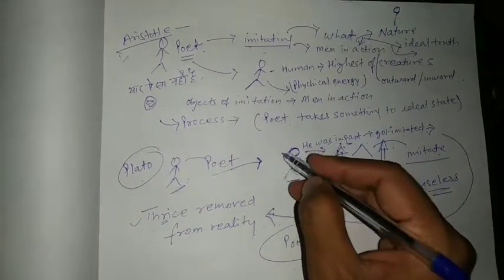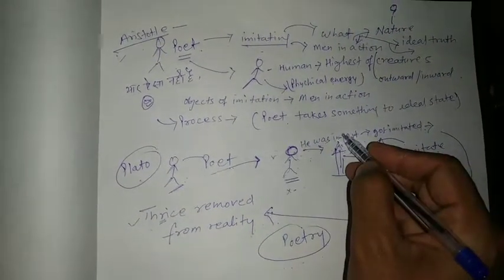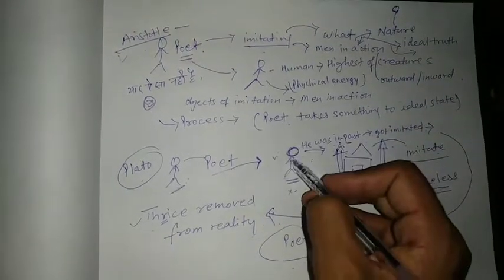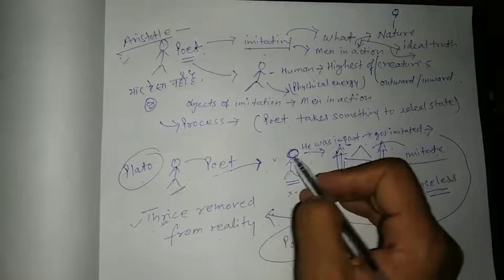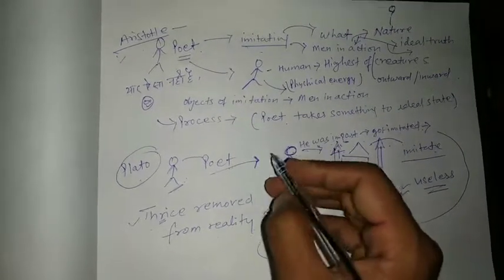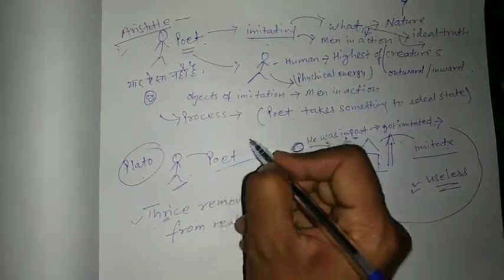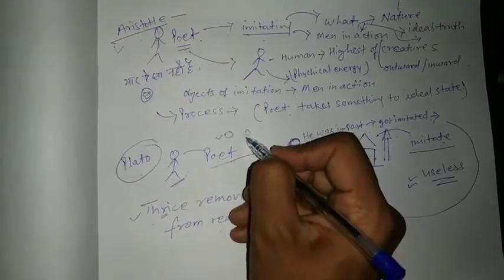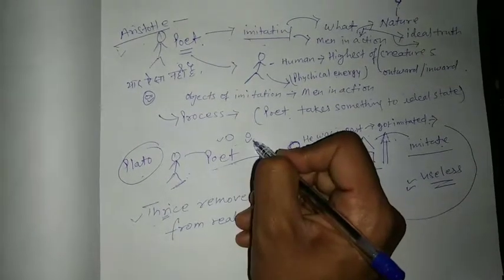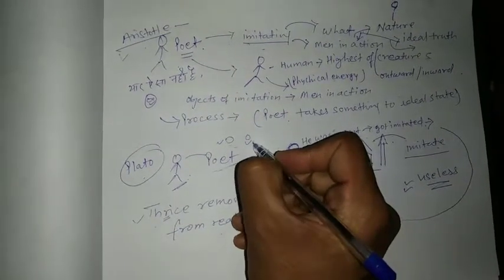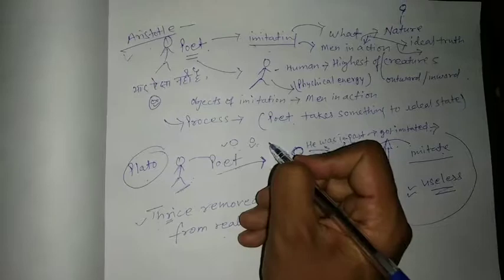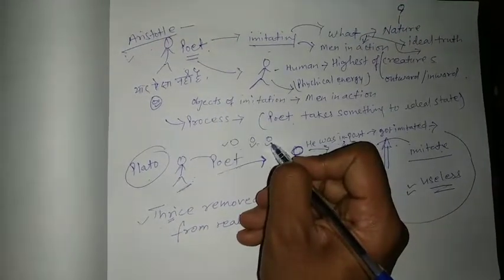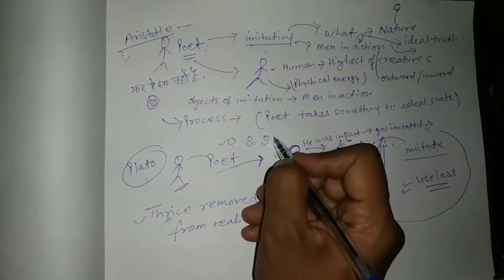With an example, there was a man in past. And poet thinks about that person. So there are two steps. There was a man in past. Now poet is thinking about that. So the both are not real right now in the mind of the poet. Now poet imitates that person or writes something about that person.